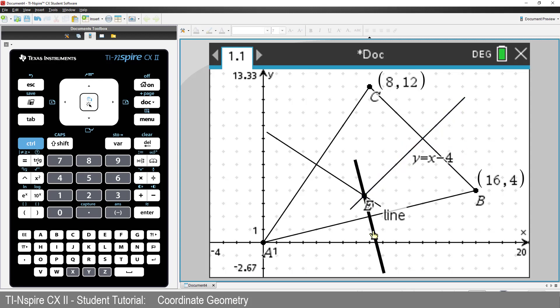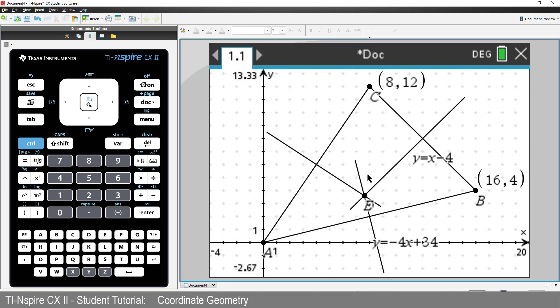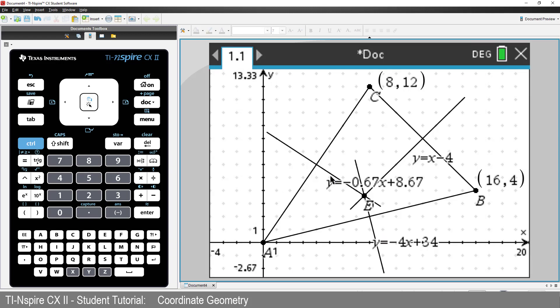The perpendicular bisector of Side BC has the equation Y equals X minus 4. We can do the same to the other perpendicular bisectors and see that the perpendicular bisector of AB has the equation Y equals negative 4X plus 34. And the last perpendicular bisector appears to be Y equals negative 2 thirds X plus 8 and 2 thirds.